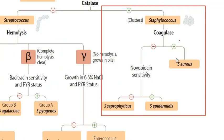In Staphylococcus, coagulase-positive is Staphylococcus aureus, while in the coagulase-negative ones, we check novobiocin sensitivity. Here, epidermidis is novobiocin-sensitive (positive), while saprophyticus is novobiocin-resistant (negative).